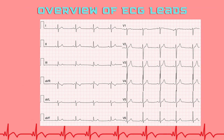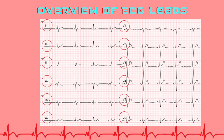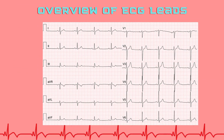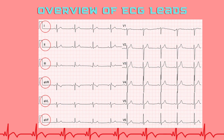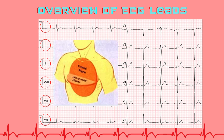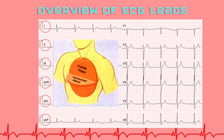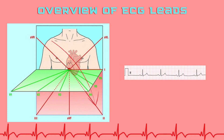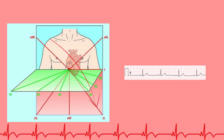A standard 12-lead ECG provides 12 distinct perspectives of the heart's electrical activity, though it only uses 10 physical electrodes. Limb leads — I, II, III, AVR, AVL, and AVF — provide information about the frontal plane of the heart. Precordial leads V1 to V6 cover the horizontal plane. Each lead looks at the heart from a different angle; for example, lead II views the heart from the right shoulder to the left leg, parallel to the direction of normal electrical flow, making it ideal for rhythm assessment.